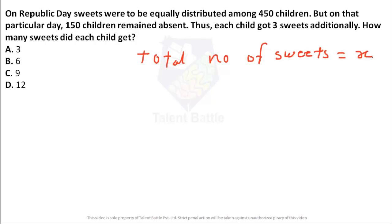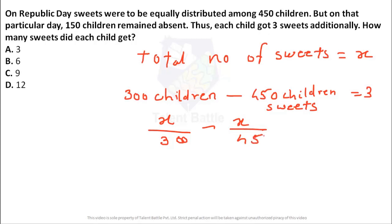So what we can do? First we can consider total number of sweets as x. Suppose I am having total number of sweets as x. As you know on the Republic Day it was planned to have around 450 children. But on that day 150 children remained absent. So each child got three sweets extra. So I need to create some equation. What equation I can create? I can say 300 children whatever the sweets they got minus 450 children sweets which was supposed to initially distribute is equal to 3.